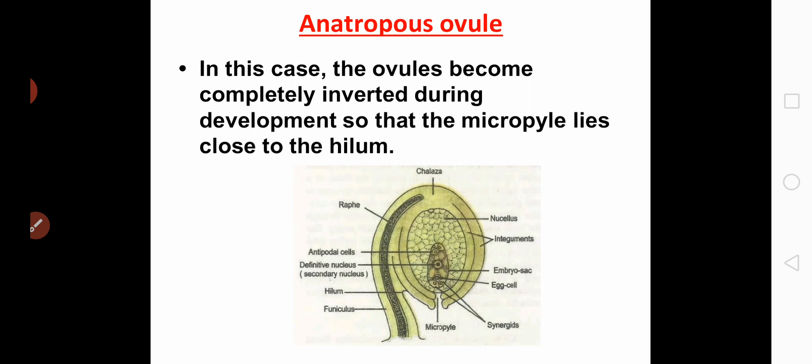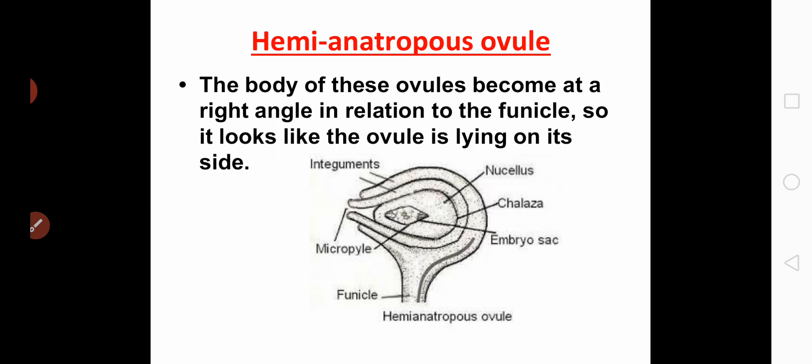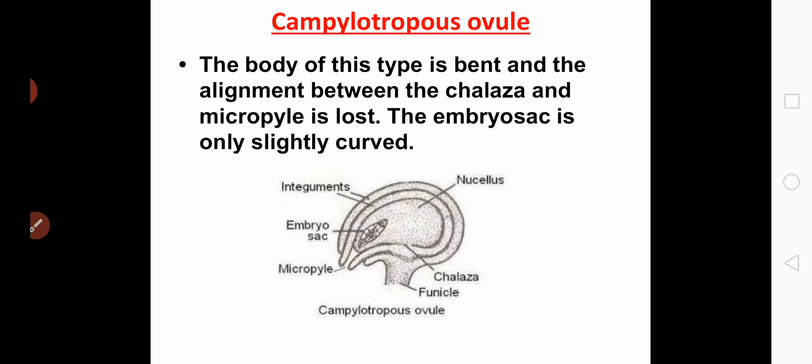The anatropous ovule is also called the inverted ovule. The ovule becomes completely inverted during development so that the micropyle lies close to the hilum — here the micropyle and the funicle lie close together. The hemianatropous ovule has a body placed at a right angle in relation to the funicle, so the chalaza and micropyle are placed at right angles to the funicle.